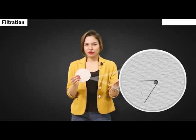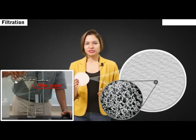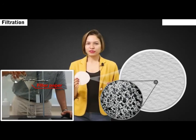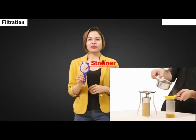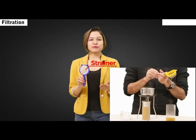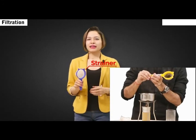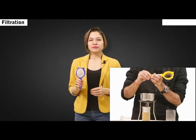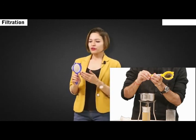Filter paper has very fine pores in it and is commonly used in science laboratories for separating solid impurities from a liquid mixture. A strainer is what we all use for separating tea leaves from prepared tea.